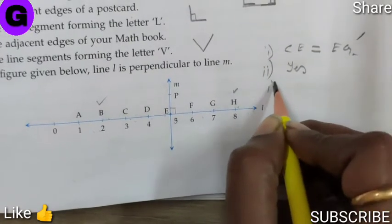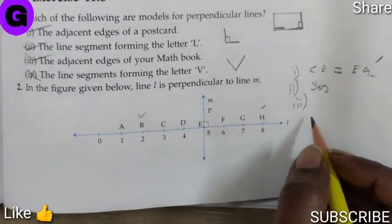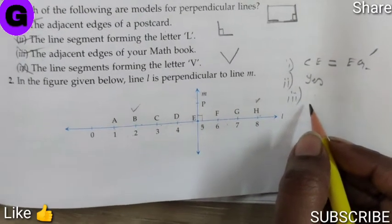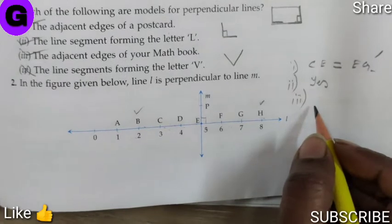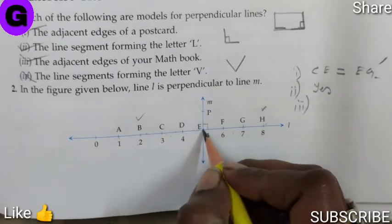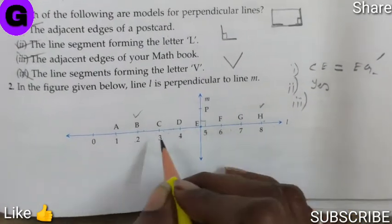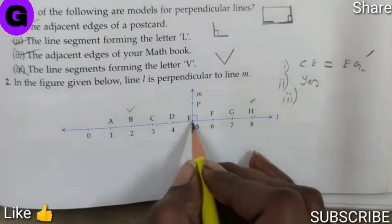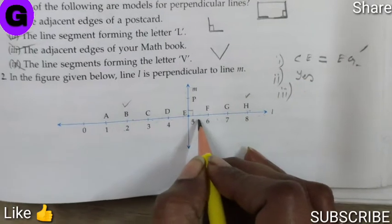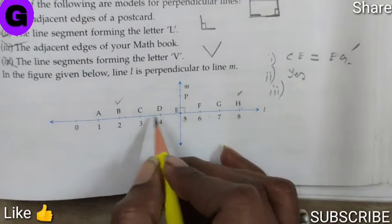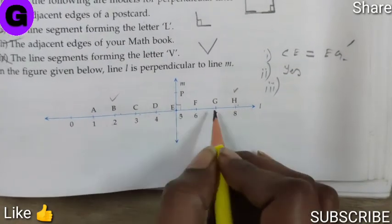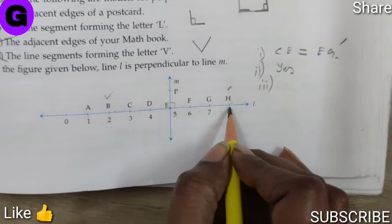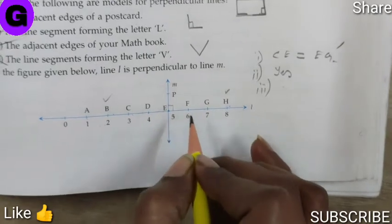Third question is, identify any two line segments for which PE is perpendicular bisector. Now, this is PE line, perpendicular bisector of which two line segments. Line segment DE, EF, they are equal. Line segment CE, EG, they are equal. Line segment BE, EH, they are equal. That means line PE is dividing them.